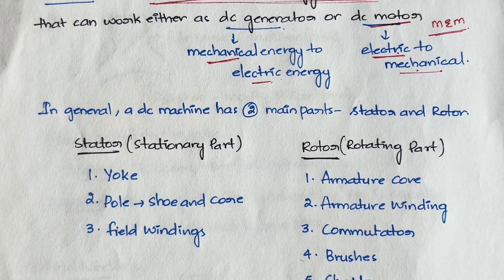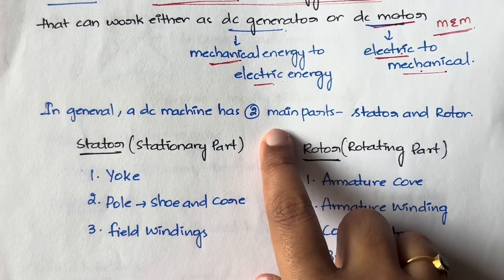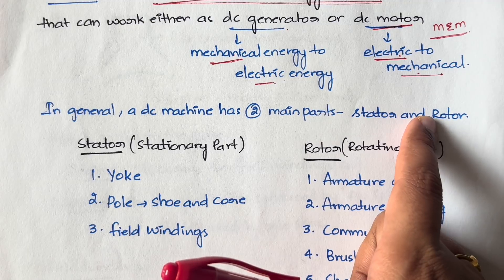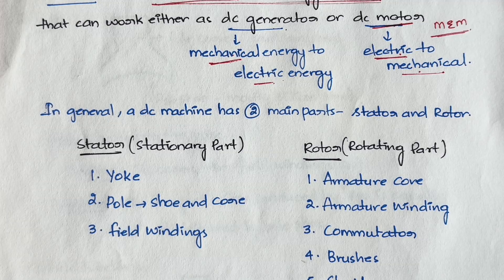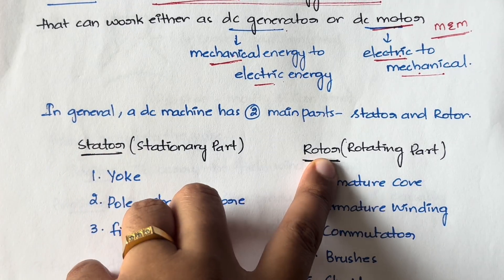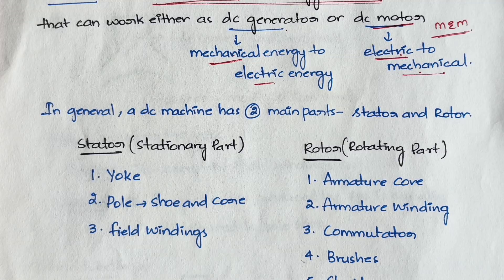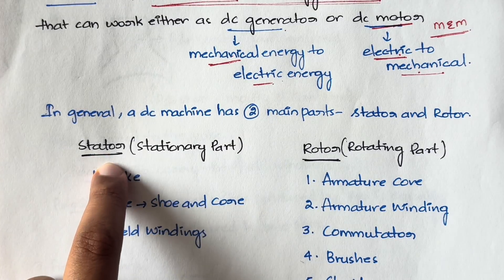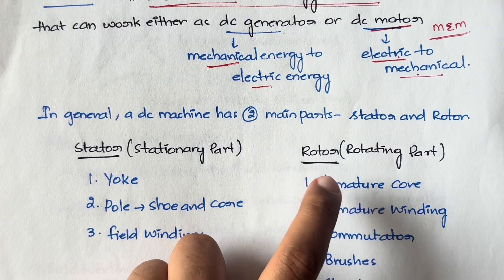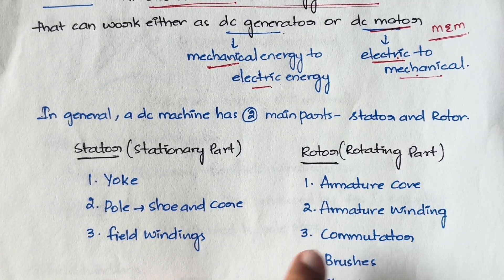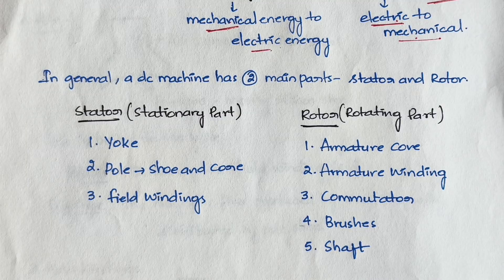Every DC machine has two main parts. One is the stator and one is the rotor. The stator is the stationary part — whatever part does not move is the stator. The rotor is the rotating part; there will be a part in the DC machine which always rotates. Under the stator we have the yoke, pole, and field windings. Under the rotor we have the armature core, armature winding, commutator, brushes, and shaft.